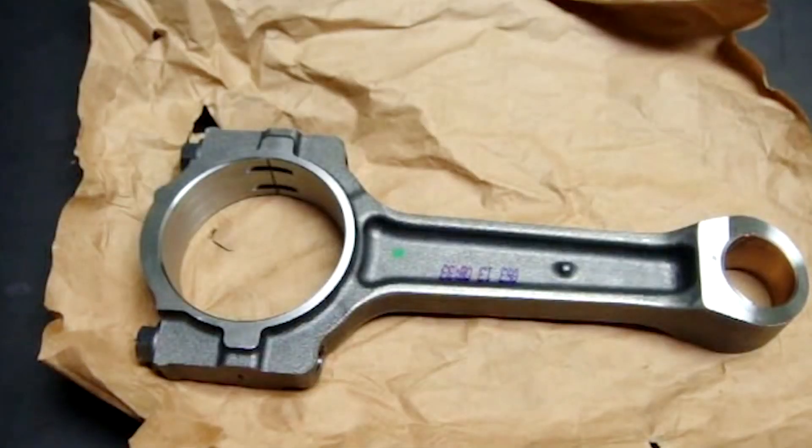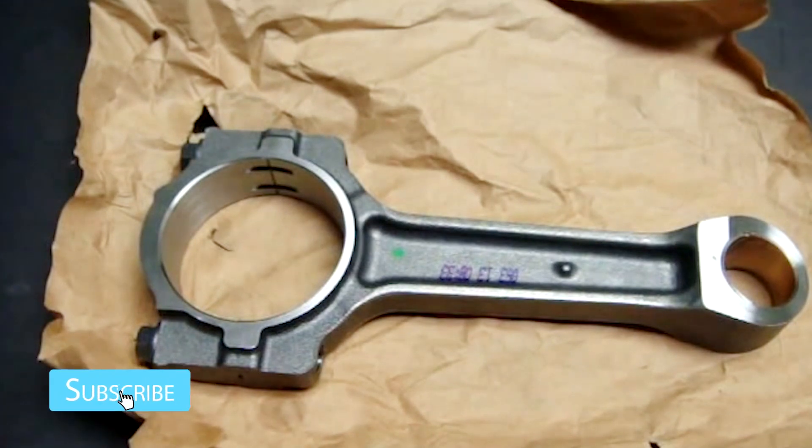This is a connecting rod from one of General Motors engines, the LSA V8 engine, which sees application use in both Chevrolet and Cadillac. For example, the ZL1 Camaro uses the LSA engine which has these connecting rods as well as the Cadillac CTS-V.